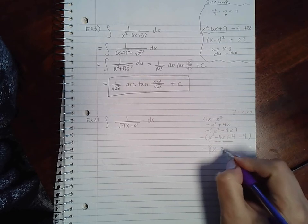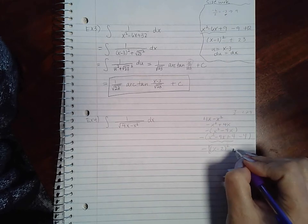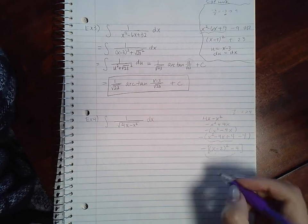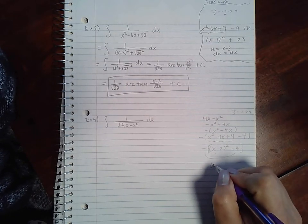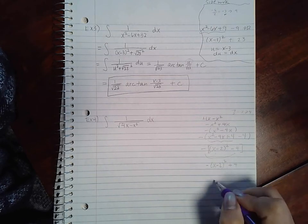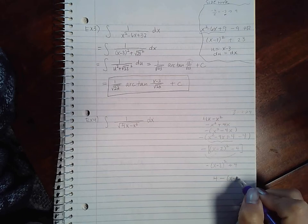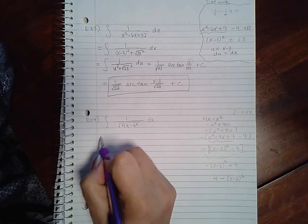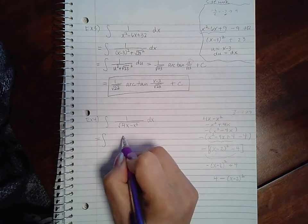So this part here will become x minus 2 squared. And if I distribute this minus out here I'll have x minus 2 squared and then positive 4, or it can be written as 4 minus x minus 2 squared.